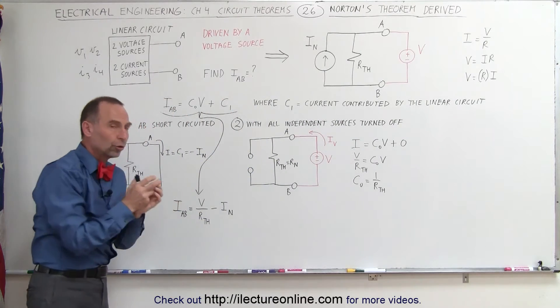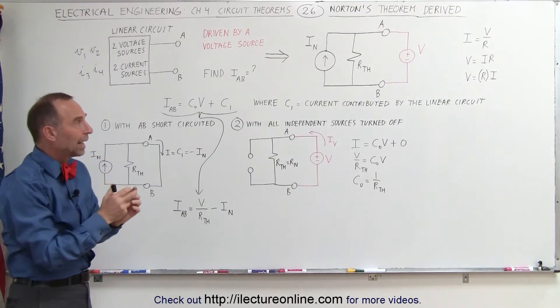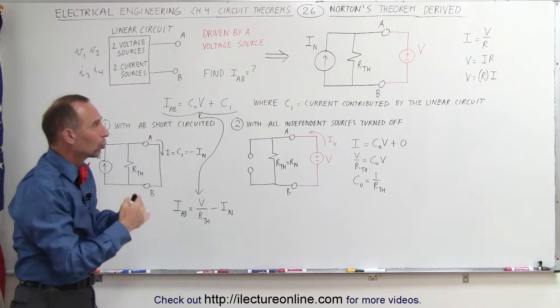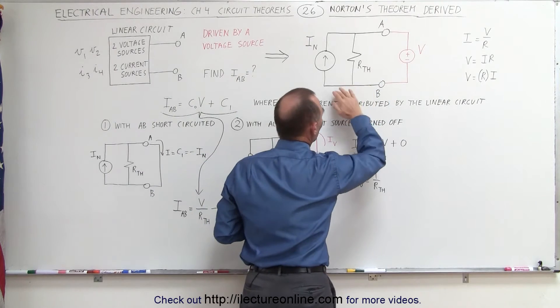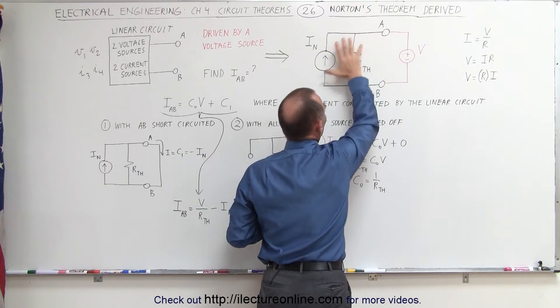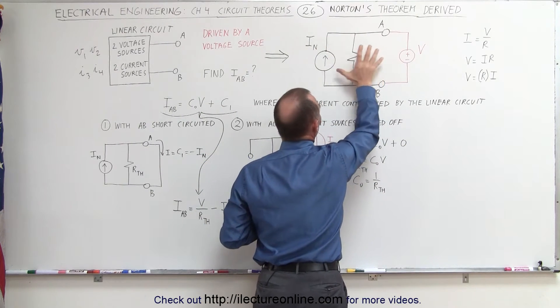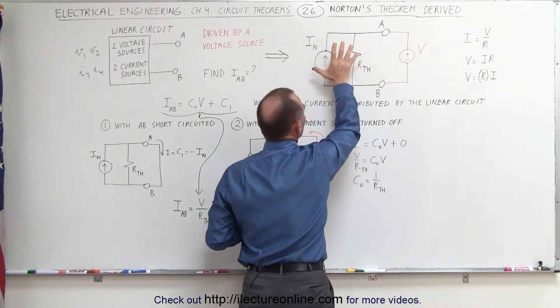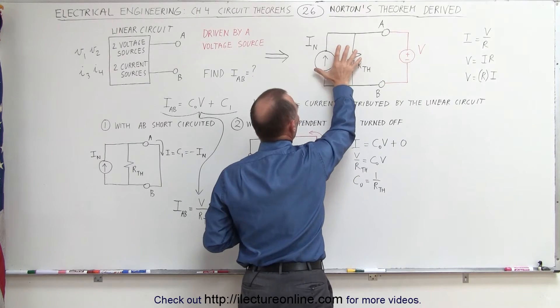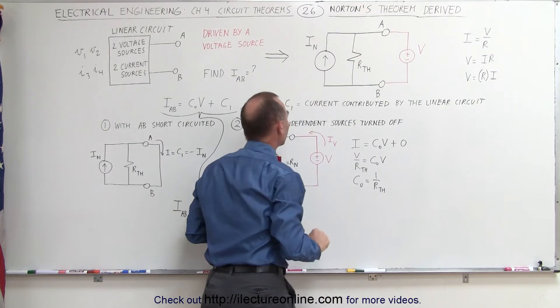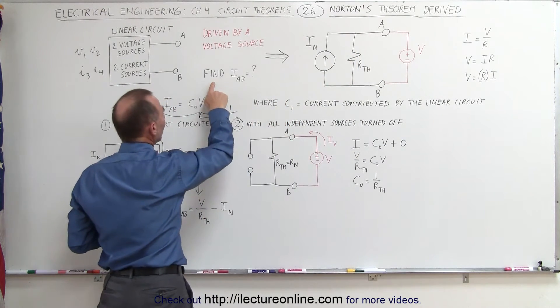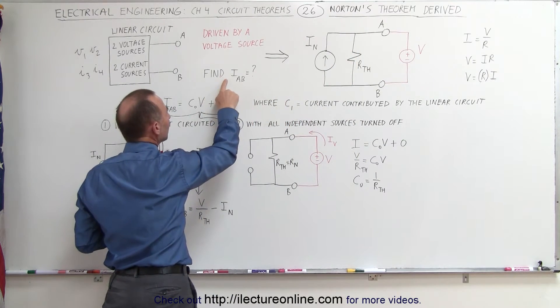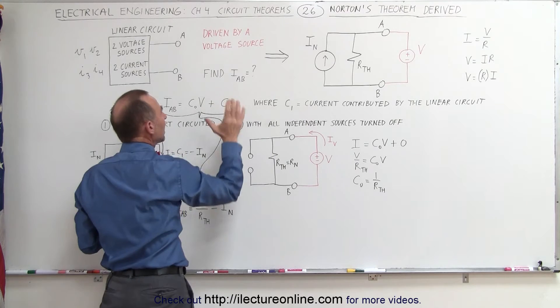Add those two currents together and we have the total current between A and B. What we're trying to do here is prove that this circuit makes sense — that this is indeed the equivalent circuit of Norton's theorem. Now we're going to try to find I between A and B.